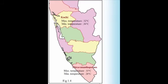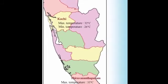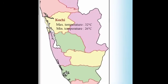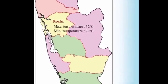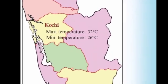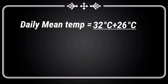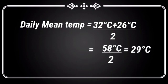Observe the map. If the maximum temperature is 32 degrees Celsius and minimum temperature is 26 degrees Celsius, find out the daily mean temperature. Daily mean temperature is equal to 32 degrees Celsius plus 26 degrees Celsius divided by 2, that is 58 degrees Celsius divided by 2, which equals 29 degrees Celsius.